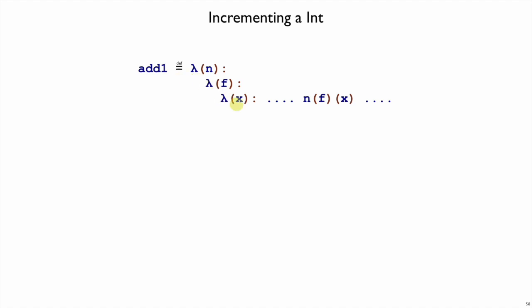Add1 is supposed to return a function that applies f n plus 1 times. We've already done it n times, so we can just do it one more time. And now we have a function that calls f on x n plus 1 times.